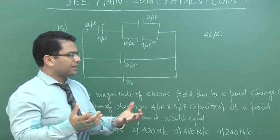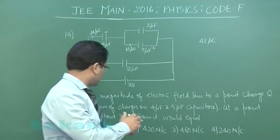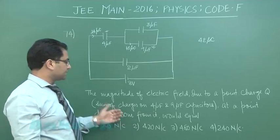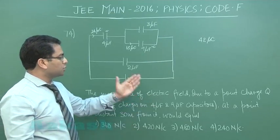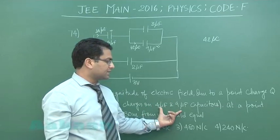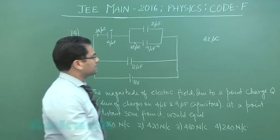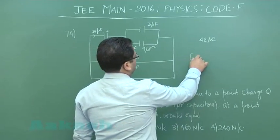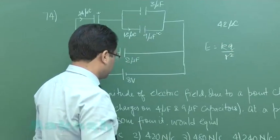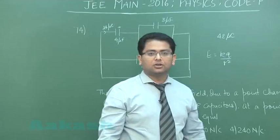Now the question is saying if this charge was there, how much would be the electric field at the distance 30 meter from it. The magnitude of electric field due to a point charge Q, where the charge is the sum of this and this at a point distant 30 meter from it. So that is now very simple. Electric field would be equals to KQ by R square, and on solving we will exactly get this value, 420 Newton per coulombs.